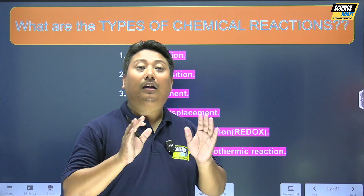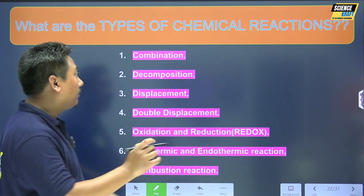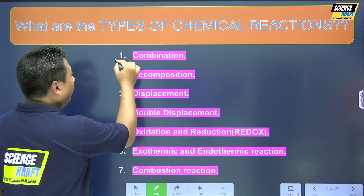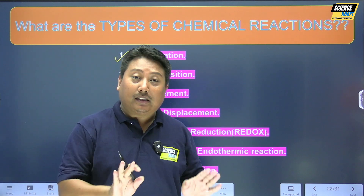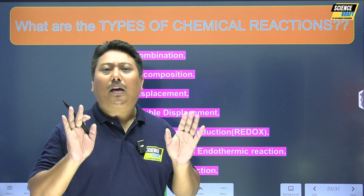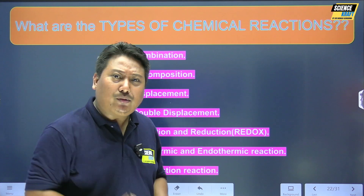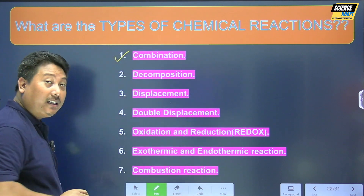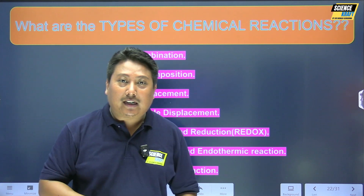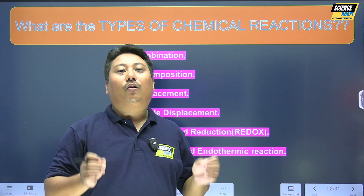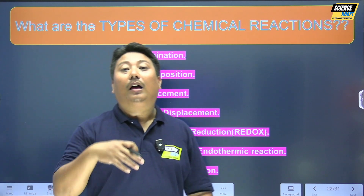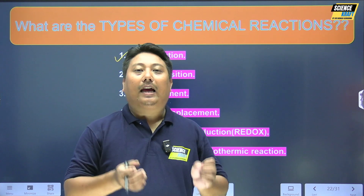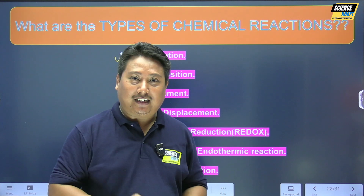The types of chemical reactions are: combination reactions, decomposition reactions, displacement, double displacement, redox reactions, endothermic and exothermic reactions, and lastly combustion reactions. Am I clear?